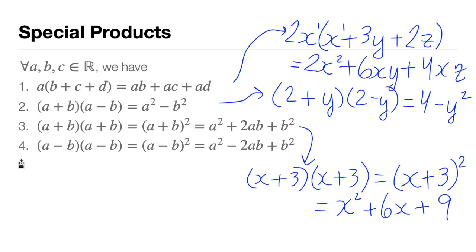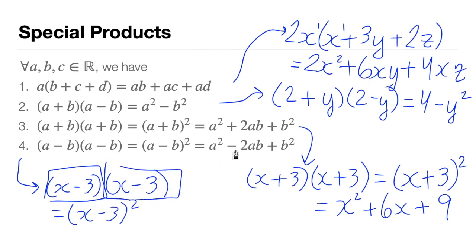Number four has both minus signs. For example, (x - 3)(x - 3), which can be rewritten as (x - 3)². This is the same as number three, but the sign is different, specifically the middle term's sign.